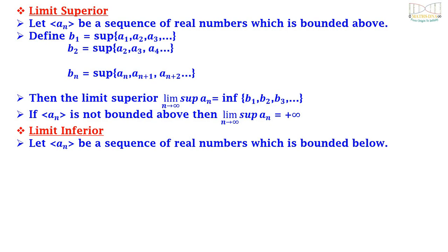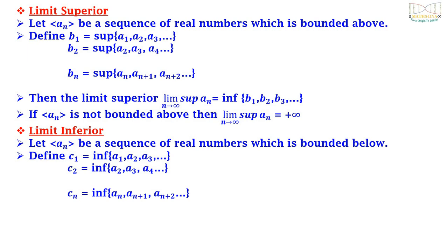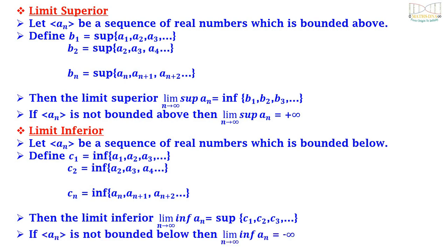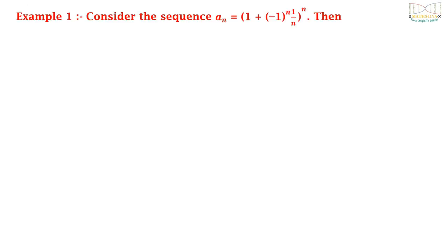Limit inferior: let {a_n} be a sequence of real numbers which is bounded below. Define c1 = inf{a1, a2, a3, ...}, c2 = inf{a2, a3, a4, ...}, and c_n = inf{a_n, a_{n+1}, a_{n+2}, ...}. Then lim inf_{n→∞} a_n = sup{c1, c2, c3, ...}. Also, if {a_n} is not bounded below, then lim inf_{n→∞} a_n = -∞.